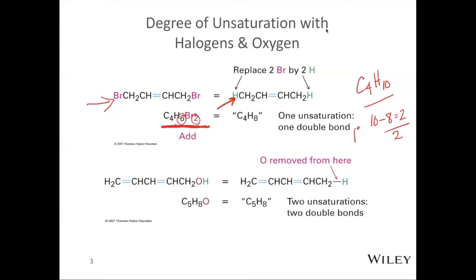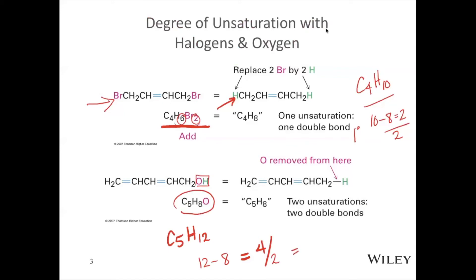Oxygen is even easier because when we have an oxygen on our molecule it actually extends out to one hydrogen on each side, so whenever we have an oxygen in our molecule we can ignore it in terms of degrees of unsaturation. So this molecule C5H8O — for C5 our saturated molecule would be C5H12. We have 8 hydrogens, so we subtract 8 from 12, that's 4, and then divide by 2 because two hydrogens are lost every time we close a ring or have a double bond — so that would be two degrees of unsaturation. With oxygen, we simply ignore it.